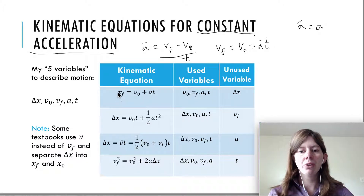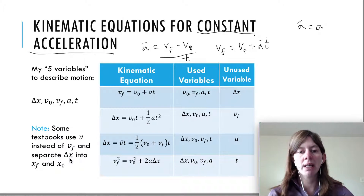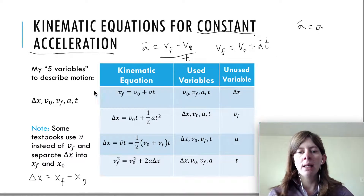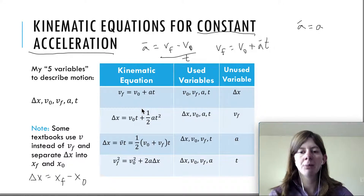When using these equations, I like to think of five variables. You could break delta x into x final and x initial, so technically there are six variables, but I just like to think of these five. If you know three of these variables and you're looking for one of the others, you'll be able to use one of the kinematic equations to solve your problem. There is one combination where you have to use two equations, but most of the time just one equation is needed.